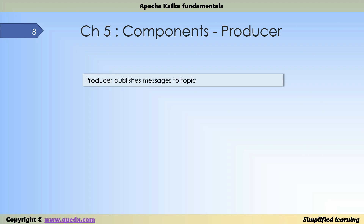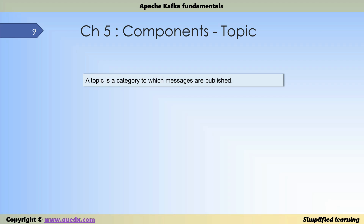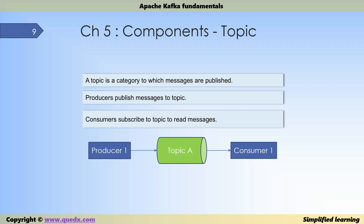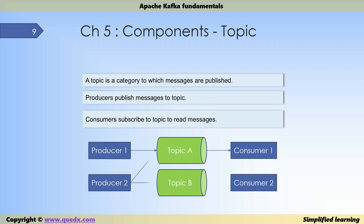A producer is an application that uses the Kafka producer API to publish messages. The producer can publish to one or more topics. Think of a topic as a virtual pipe — producers publish messages to a topic, and consumers subscribe to a topic to read those messages. There can be multiple producers publishing to one or more topics. Similarly, consumers can be subscribed to one or more topics. For example, producer one publishes to one topic, while producer two publishes to both topic A and topic B. Consumer one is subscribed to only one topic, while consumer two is subscribed to both topic A and topic B.